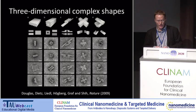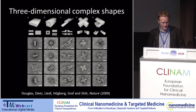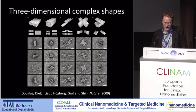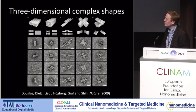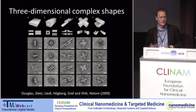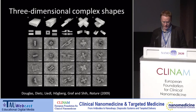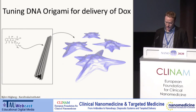Our work on three-dimensional DNA origami is described in a paper from 2009. This figure shows transmission electron micrographs from that study, with scale bars of 20 nanometers. As you can see, we have the power to create some pretty interesting and complex shapes.